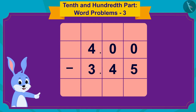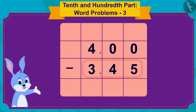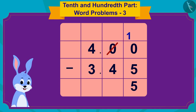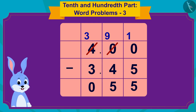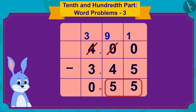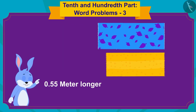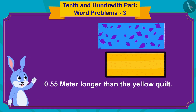Now I will subtract 345 from 400 first using this simple process of subtraction. That makes it 55. Now, because there are two digits after the decimal point, I will write the decimal point in the answer in such a way so that there are two digits after the decimal point, thought Bunny. Oh, the blue quilt is 0.55 meter longer than the yellow quilt.